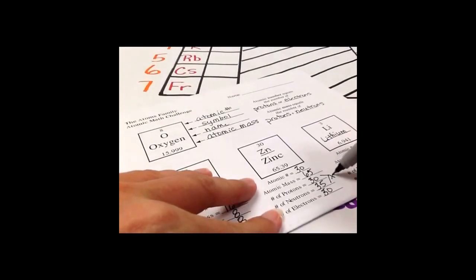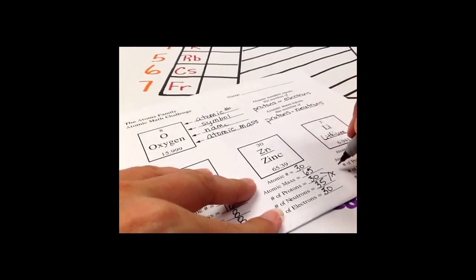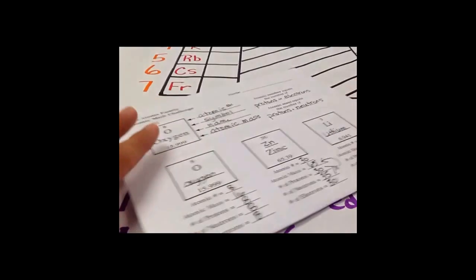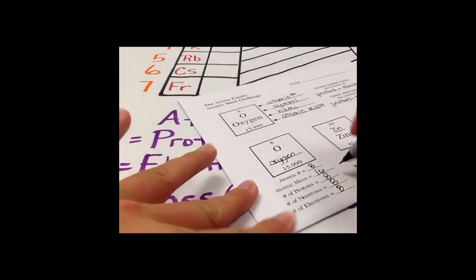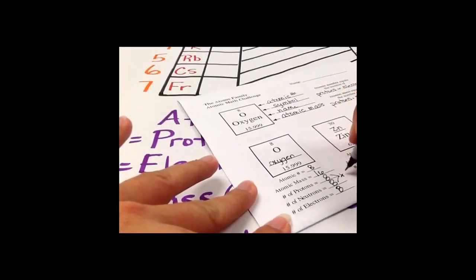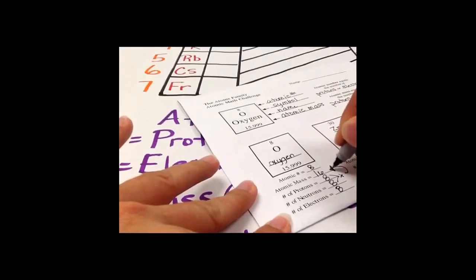Let's look at this one. Protons plus neutrons equals 65. Hmm, that's my atomic mass. Last one, my protons plus neutrons equals my atomic mass.